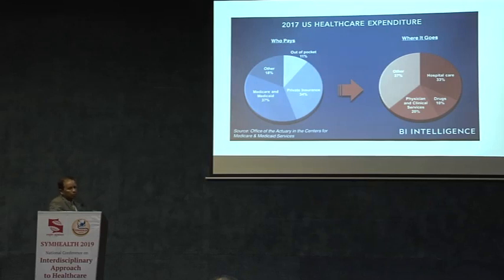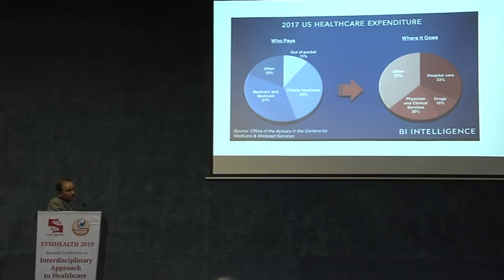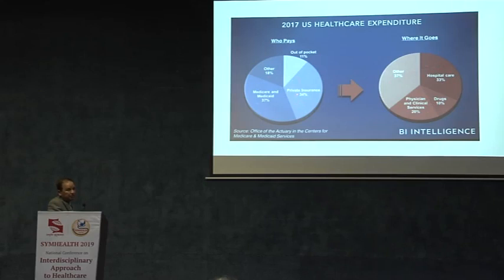In the US, who pays for what? Private insurance covers one-third. Medicare and Medicaid — government programs providing insurance for the poor or those above 65 — cover another large share. Out-of-pocket is only 11%, including co-pay, deductible, and some cash payments. The expenditure breakdown: 33% goes to hospital care, then physician and clinical services, drugs, and others. This pie is extremely different from the Indian pie.